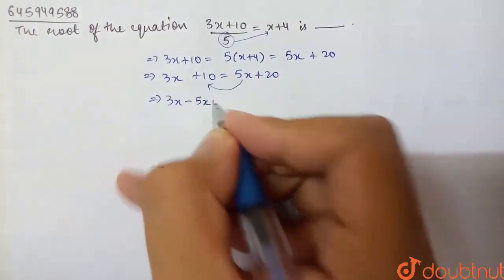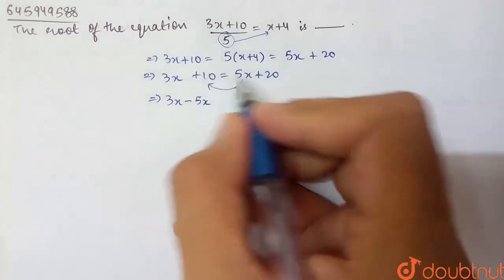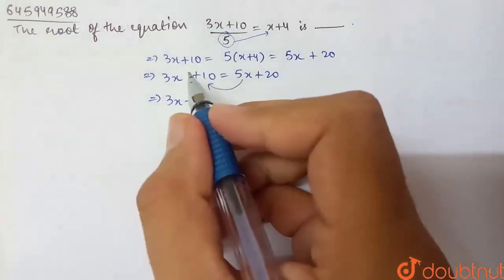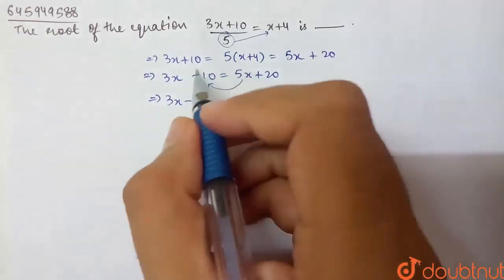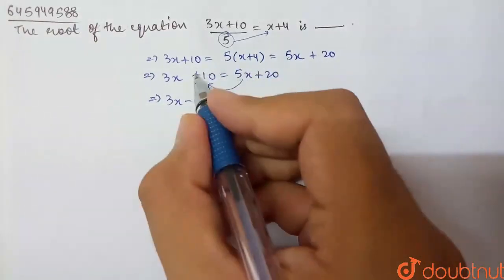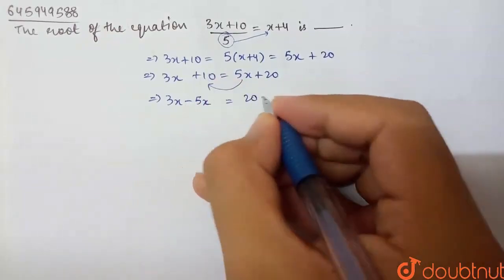3x minus 5x. When we go from the right-hand side to the left-hand side, we get the inverse sign. Plus becomes minus, minus becomes plus. So 5x now becomes minus 5x, and 10 becomes minus 10.